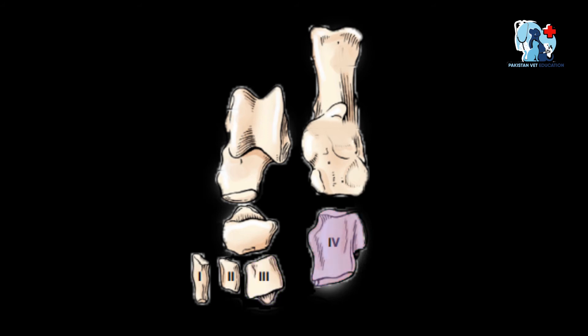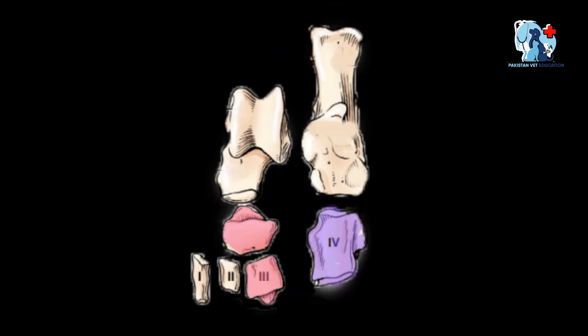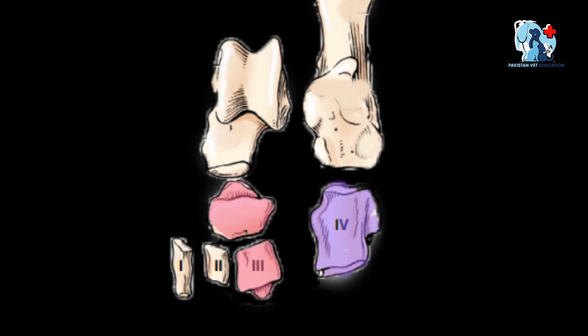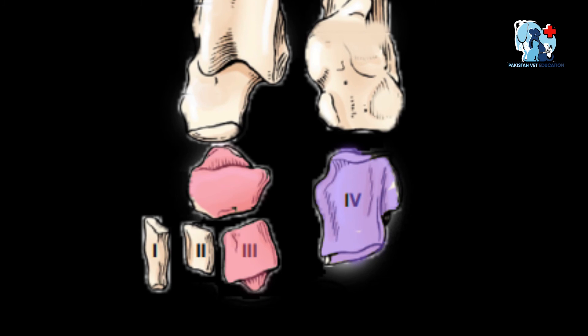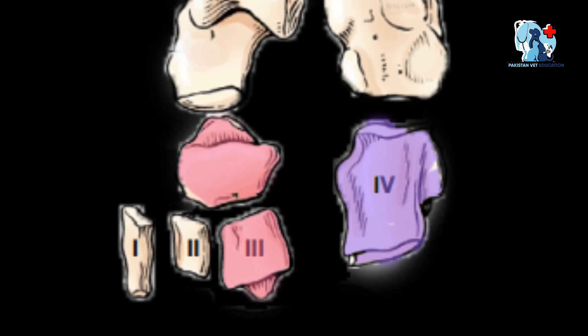The most important bone of this row is the fourth tarsal bone. It forms the distal row laterally, is remarkably high, and resembles a quadrangular prism. It articulates with the calcaneus proximally, distally with the third and fourth metatarsal bones, and medially with the central tarsal bone and the third tarsal bone. The length of the fourth tarsal bone is approximately equal to the combined length of the central tarsal bone and the third tarsal bone, as is clear in the picture.